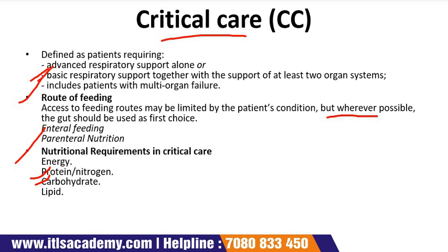Regarding carbohydrate requirements in critical illness, glucose administration should not exceed the maximum glucose oxidation rate of 4 mg per kg per minute. For lipid in critical illness, intake should lie between 0.8 to 1 g per kg per day, and approximately 3 to 4.5% of total energy should be provided as lipid to prevent essential fatty acid deficiency.